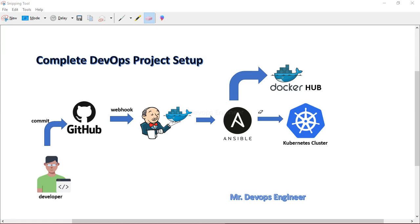In this project we are going to use various DevOps tools like GitHub, Jenkins, and a Kubernetes cluster. We will also learn about Kubernetes deployments and services, and we will try to write simple playbooks along with a Dockerfile.